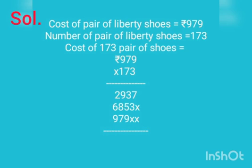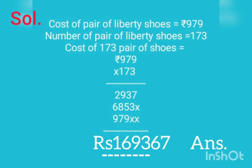7 nines are 63, carry 6, write 3. 7 sevens are 49 plus 6 is 55, carry 5, write 5. 7 nines are 63 plus 5 will become 68. Now put 2 crosses here. 1 nine is 9, 1 seven is 7, 1 nine is 9. So after adding we will get 1 lakh 69,367 as the answer.